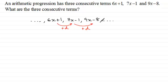What we know is that if we were to subtract this term, 7x minus 1, from this term here, it would give us d. And if we were to subtract 6x plus 1 from 7x minus 1, it would also give us d. So what I'm saying is that they share this common difference.